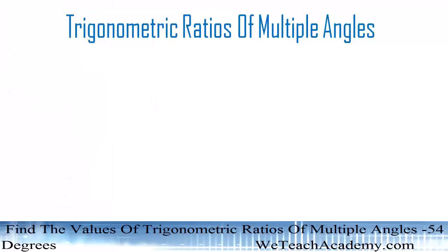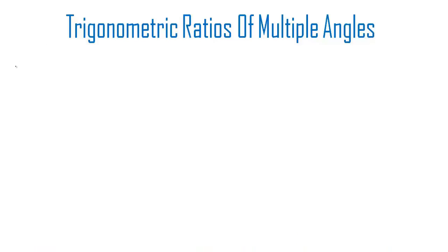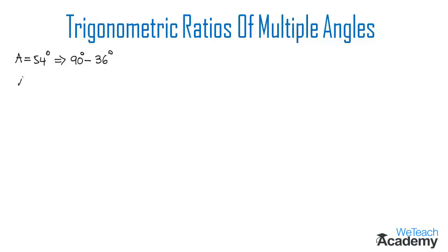Welcome to VTeach Academy. Today's topic is trigonometric ratios of multiple angles. In this section, we are going to derive the value of an angle A equal to 54 degrees. Here, 54 degrees can also be written as 90 degrees minus 36 degrees, so let us apply cosine on both sides.